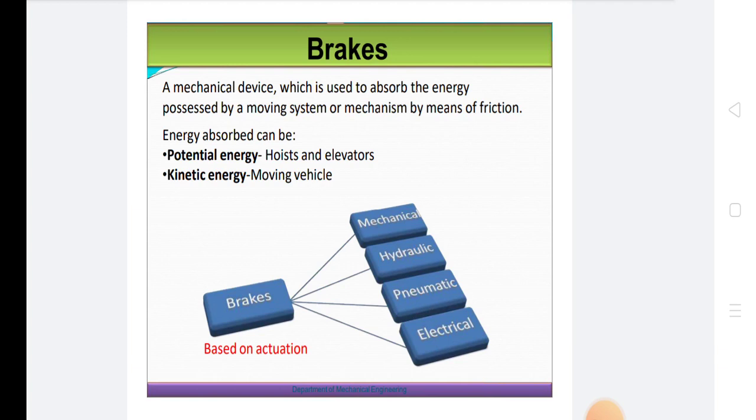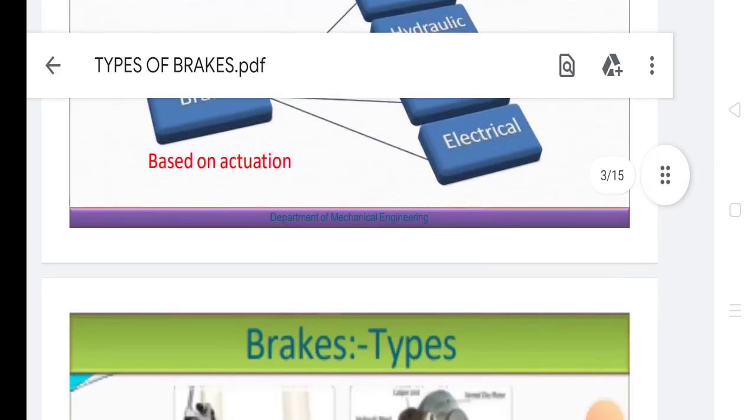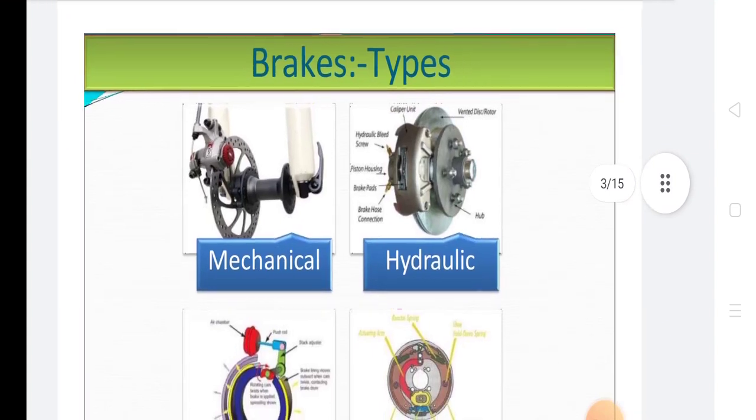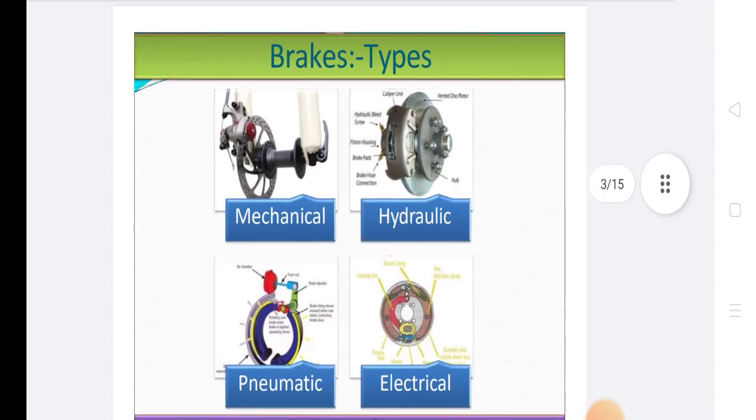By knowing the frictional resistance we can find the torque transmitted and hence the power of engine. The purpose of braking system is to provide a means to slow the vehicle without affecting the engine speed.